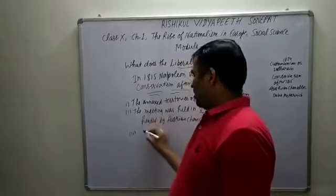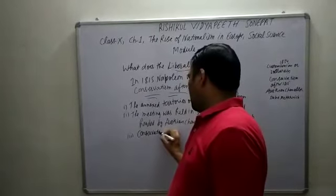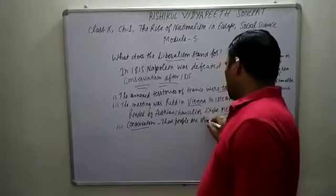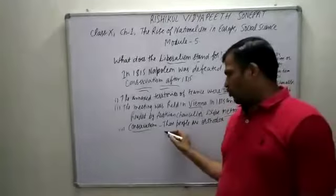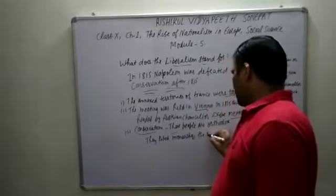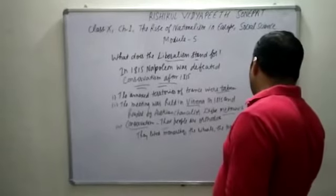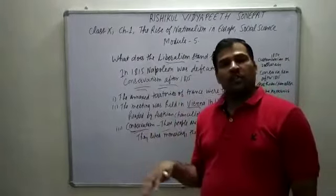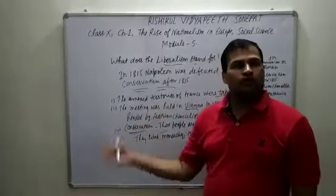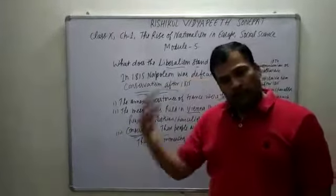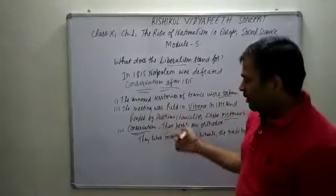Now what is conservatism? These people were orthodox. Earlier the monarchy system was there, and they liked monarchy, rituals, traditions, and churches. They did not like changes. Such conservative people were orthodox — they were happy for old traditions to continue and flow. So after the defeat of Napoleon, conservatism policies and views were adopted by these conservative peoples.